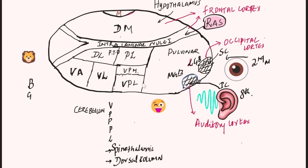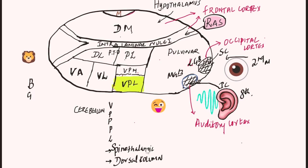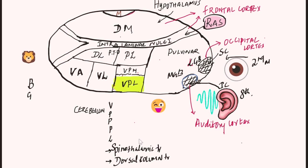VPL nucleus is very important because it will carry all sensations in the body. The spinothalamic tract and dorsal column — these two groups of afferent fibers are VPL.